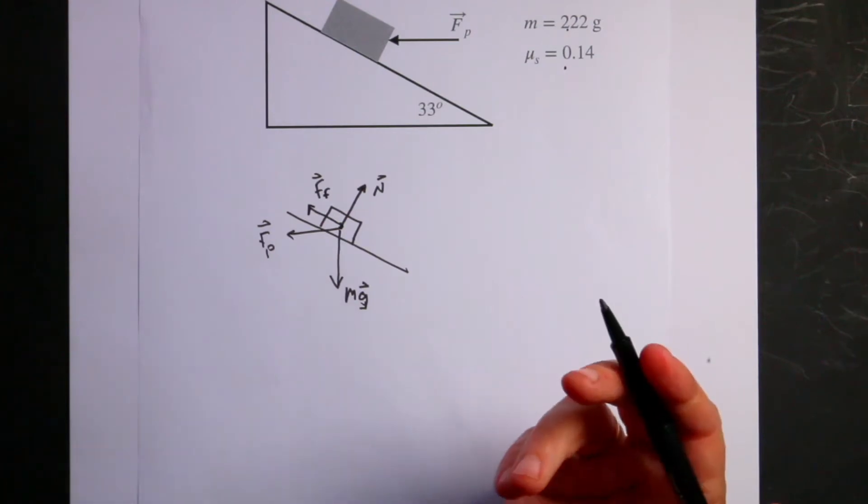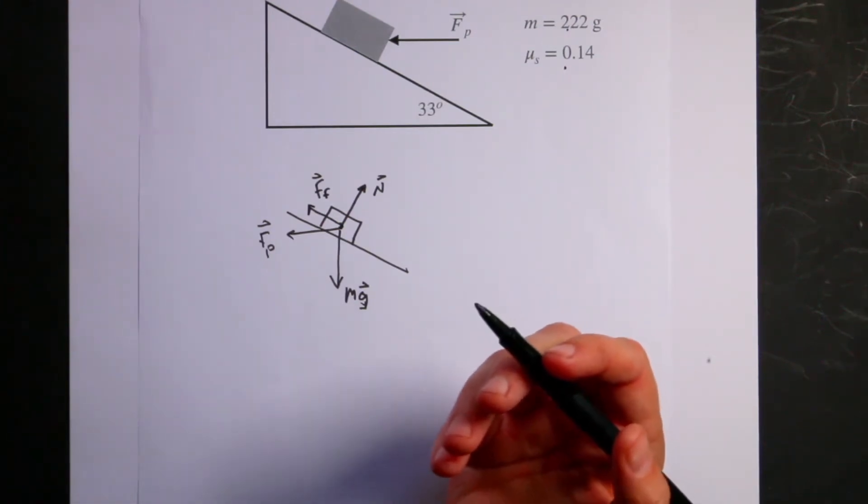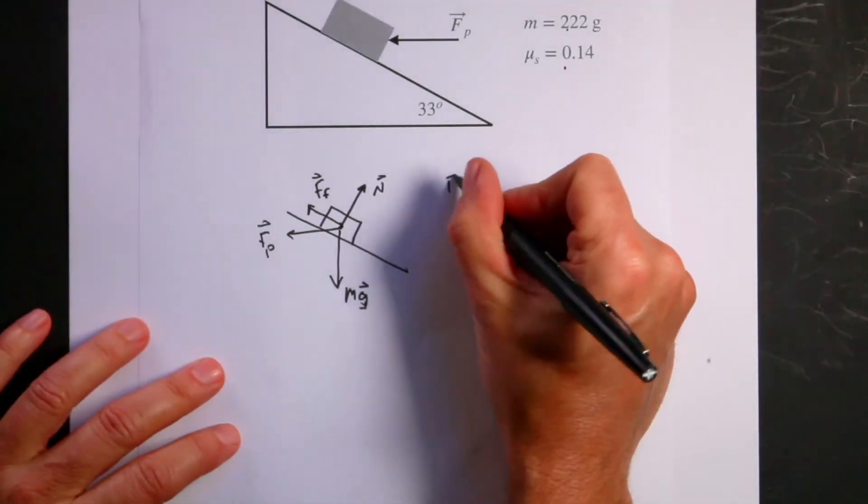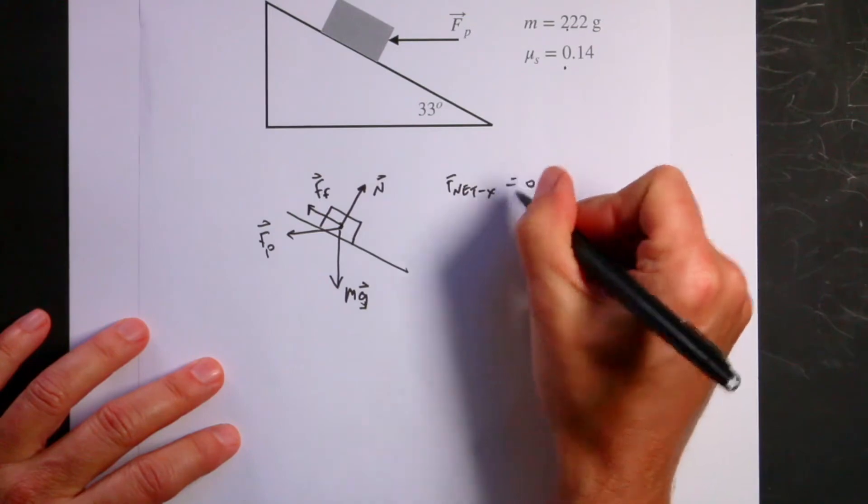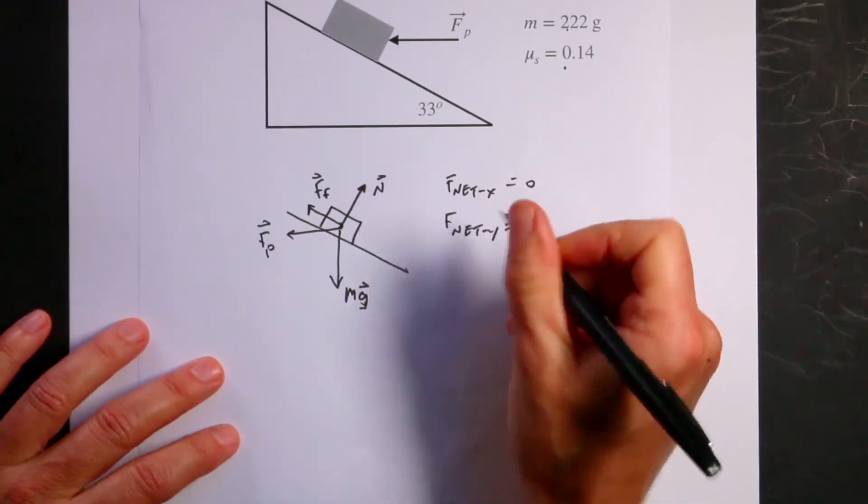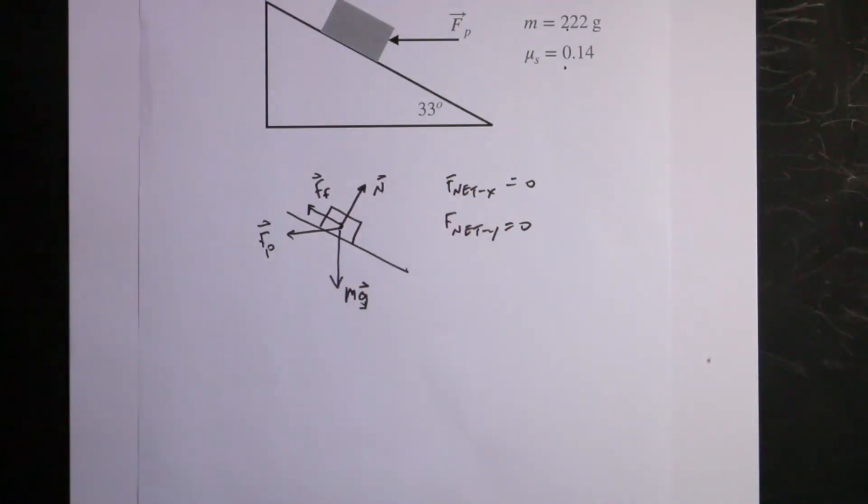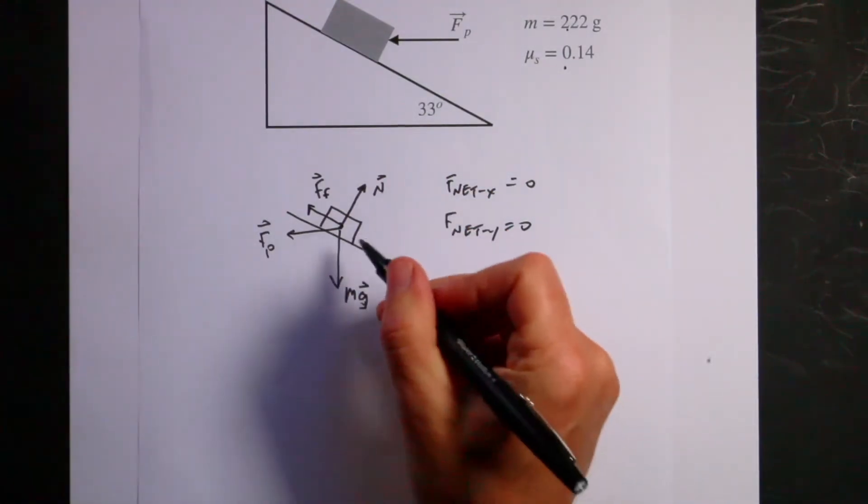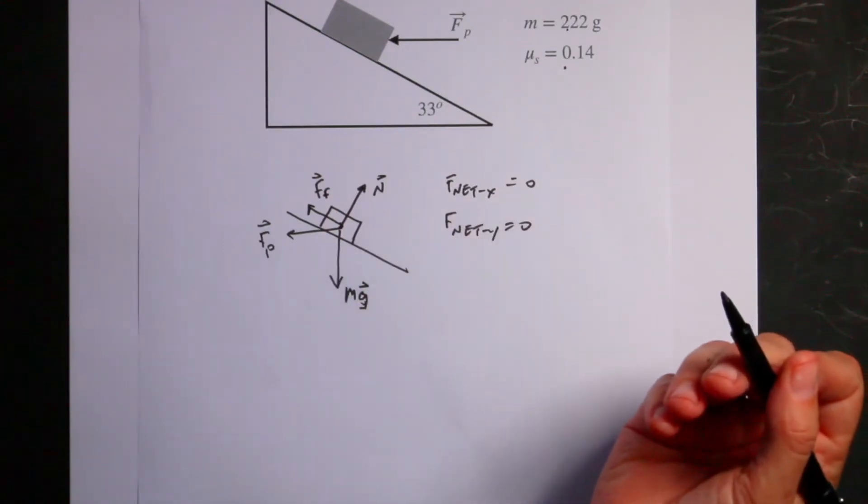Now I have these four forces and I know the following: F net x equals zero, F net y equals zero, because I want to just keep it from changing its motion. So it's right at that tipping point.